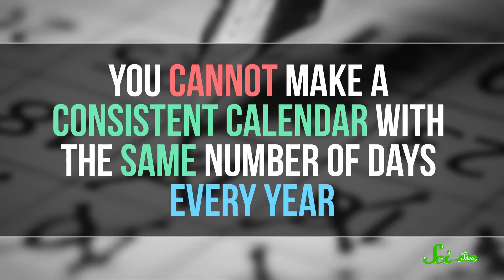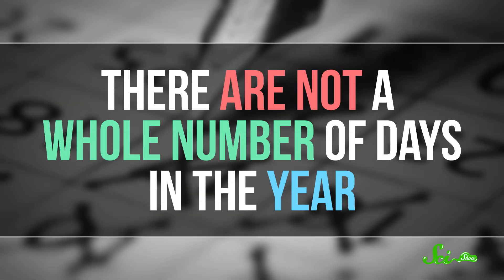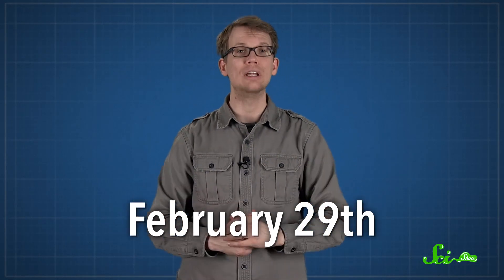Once you start trying to count the days of the year, though, it doesn't take long to notice a problem. You just can't make a consistent calendar with the same number of days every year, because there aren't a whole number of days in the year. That is why today's date exists — we have to add an extra day to the calendar every now and then, and we do it on February 29th.